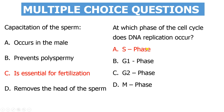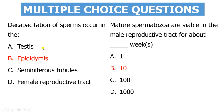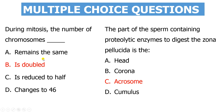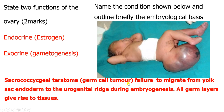During S phase, DNA replication occurs. Decapacitation is a process that occurs within the epididymis, and spermatozoa will be viable within the epididymis for about 10 weeks. During mitosis the number of chromosomes is doubled, and proteolytic enzymes are found within the acrosome. The functions of the ovary are divided into endocrine — production of hormones such as estrogen and progesterone — and exocrine, which is the formation of the oocyte.